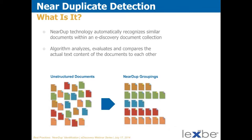This slide shows the basic idea: you have documents throughout a collection that are near-duplicates of each other but may be in very different parts of the collection. The near-dupe groupings bring them together.